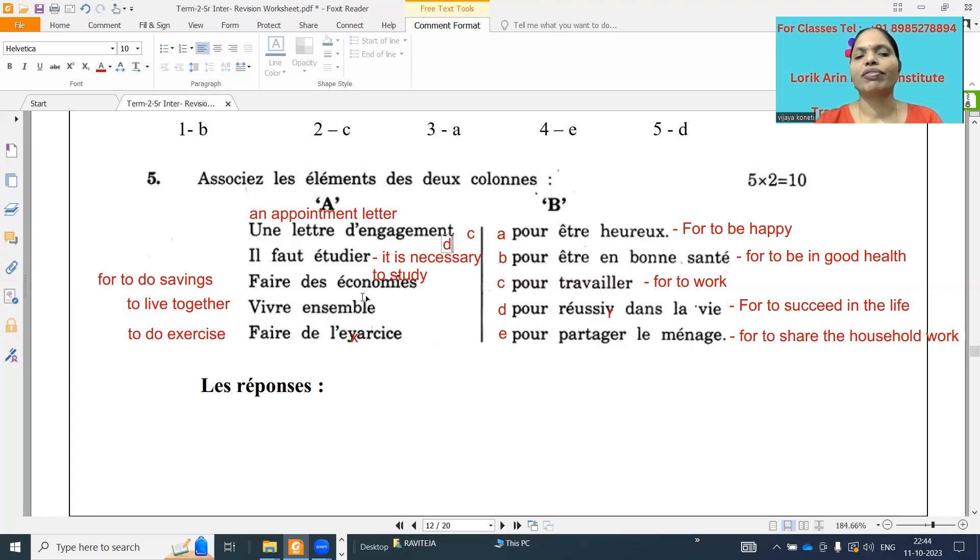And next one, faire des économies, for to do the savings, what it will be? Pour être heureux. For to be happy. And vivre ensemble, to live together, pour partager les ménages. For to share the household work. And faire de l'exercice, pour être en bonne santé. For to be in good health. D'accord?